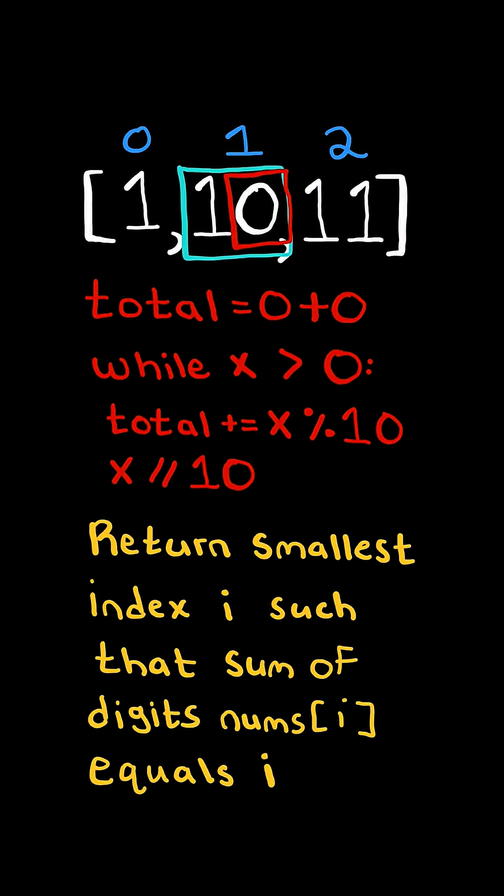We then integer divide the number by 10, which removes the last digit, and continue the process with the new number. We mod the number by 10 to get the last digit, add the digit to total, then remove the last digit. At the end, if the total equals the index, we return the index.